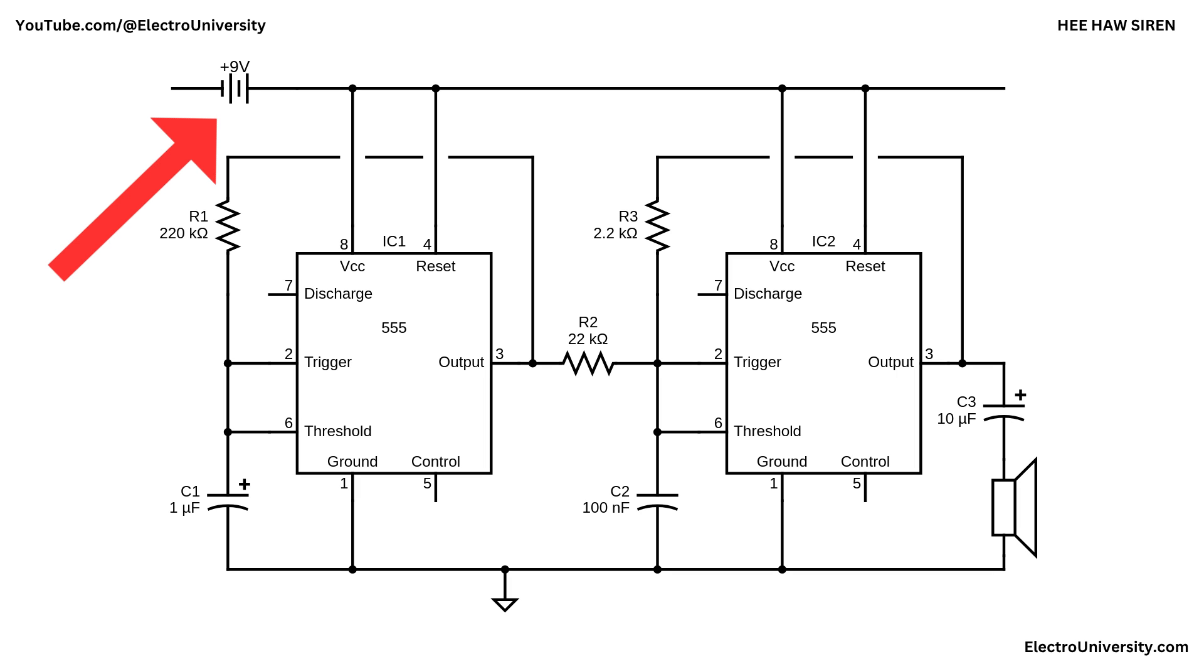Power is supplied by a 9 volt battery and both ICs share the same power and ground lines. The result is a classic alternating siren sound, generated by frequency modulation between the two 555 timers.